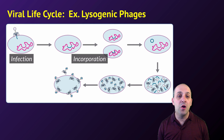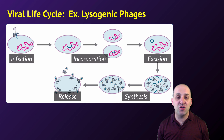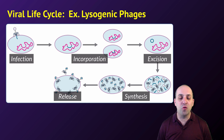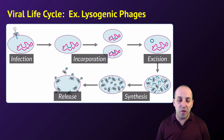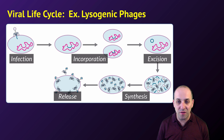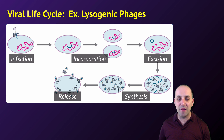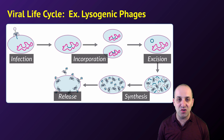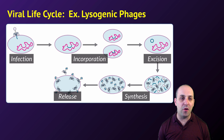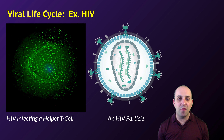There are also lysogenic phages. These inject their DNA, but instead of immediately destroying the host cell, that DNA incorporates itself into the host cell's chromosome. As the host cell divides, the viral genome is copied along with it. When environmental cues are right, the viral genome excises from the host chromosome and triggers massive production and release of phages — a bit more complex than the lytic cycle but still relatively straightforward.